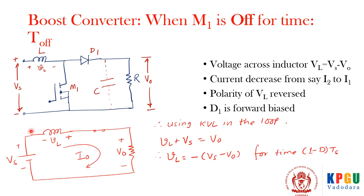This is the equivalent circuit when the switch is off. Notice the reverse polarity — vL is now positive on the other side — because the current is reducing from i2 to i1, making di/dt negative. Applying Kirchhoff's Voltage Law in this loop, we get the voltage across the inductor as −(Vs − V0) for the toff time, which is (1 − d)·Ts, where d is the duty ratio.